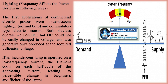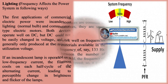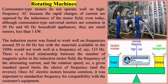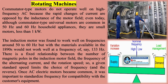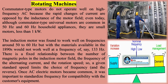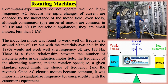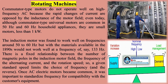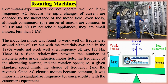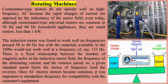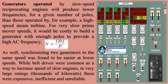There is a fixed relationship between the number of magnetic poles in the induction motor field, the frequency of the alternating current, and the rotation speed, so a given standard speed limits the choice of frequency and the reverse. Once AC electric motors became common, it was important to standardize frequency for compatibility with the customer's equipment. Generators operated by slow-speed reciprocating engines will produce lower frequencies for a given number of poles than those operated by, for example, a high-speed steam turbine. For very slow prime mover speeds, it would be costly to build a generator with enough poles to provide a high AC frequency. Also, synchronizing two generators to the same speed was found to be easier at lower speeds.